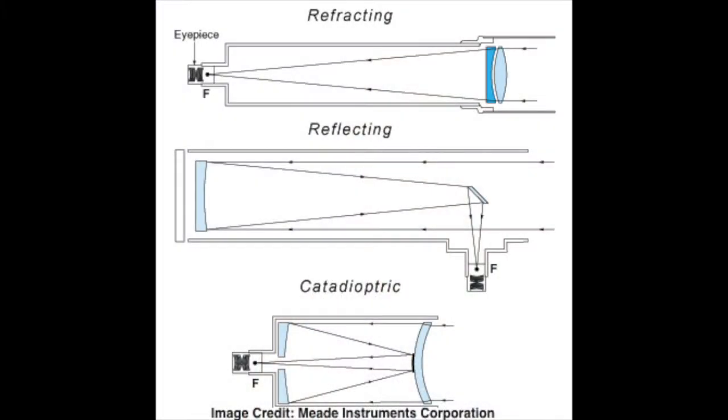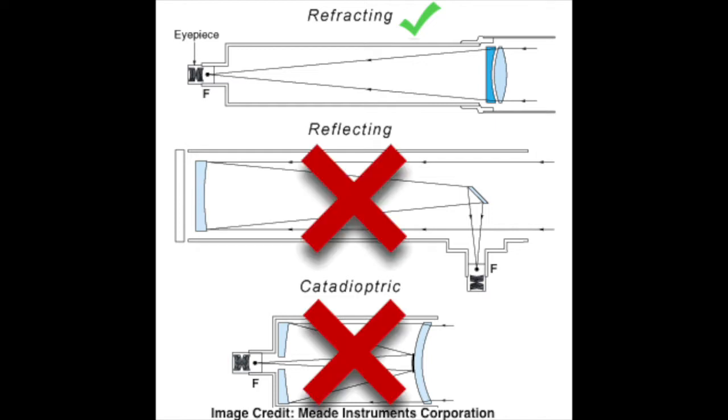So first you need a refractor telescope. Refractors use a lens rather than mirrors to amplify light. That's important because if you're using a Newtonian reflector or a catadioptric telescope that uses a mirror lens combination, it's actually possible to damage the holder for the secondary mirror and we want to avoid doing that.